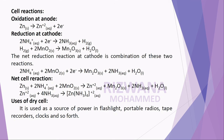The dry cell is used as a source of power in flashlights, portable radios, tape recorders, clocks, and so forth. It is a primary voltaic cell and cannot be recharged once the chemicals are consumed.